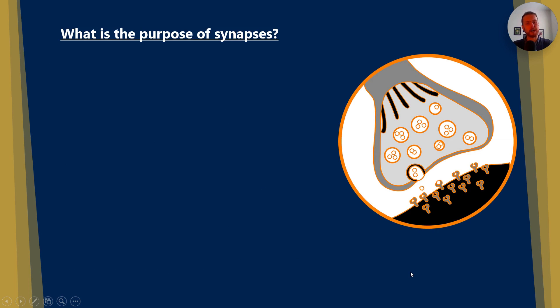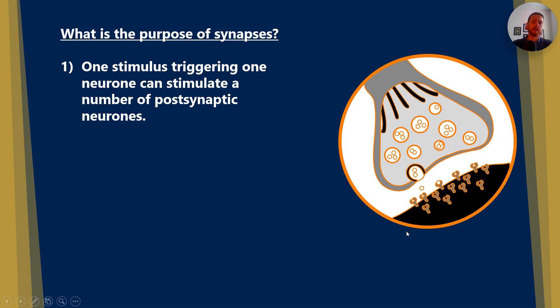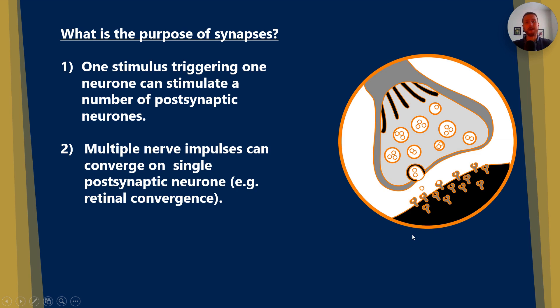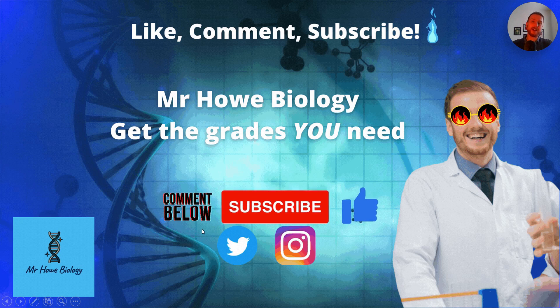So what is the purpose of a synapse then? Well, firstly, one stimulus triggering one neuron can stimulate a number of post-synaptic neurons. Additionally, multiple nerve impulses can converge on a single post-synaptic neuron. Now the example of retinal convergence is a big one in your specification, where multiple rod cells converge on a single bipolar neuron.